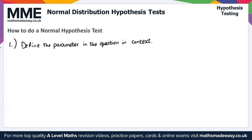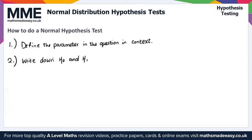Step two: as this is a hypothesis test, we want to define our hypotheses. So we write down our null hypothesis H0 and also the alternate hypothesis H1.